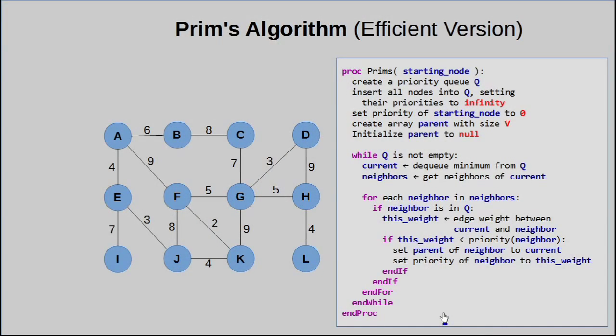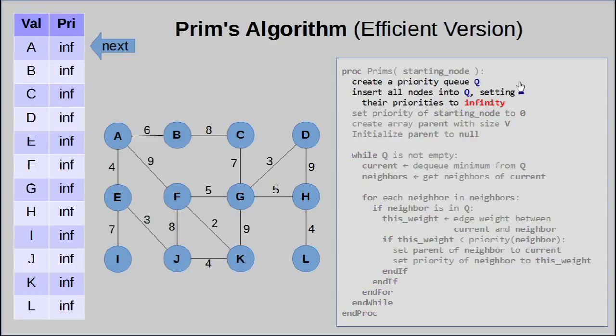As mentioned earlier, we're going to be using a priority queue. Instead of explaining it to you while looking at the algorithm, let's just jump into the trace. When you see it working, it makes a lot more sense. So first and foremost, we create a priority queue, and we insert all the nodes into the queue, as you can see in this column. And of course, we set all their priorities to infinity.